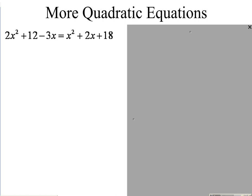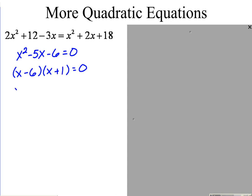More quadratic equations: whether solving by factoring or the quadratic formula, always get everything on one side set equal to zero first. Subtract x squared, subtract 2x, subtract 18 to form the quadratic. Checking for factorability — numbers that multiply to be negative 6 and add to be negative 5 are negative 6 and positive 1. Set each factor equal to zero and solve for the two solutions.